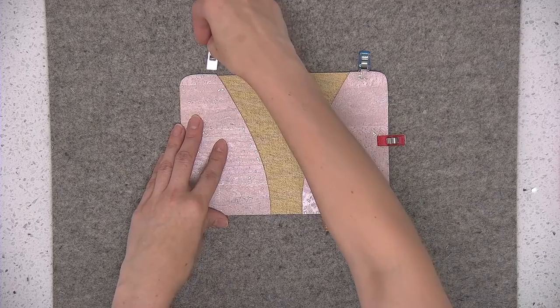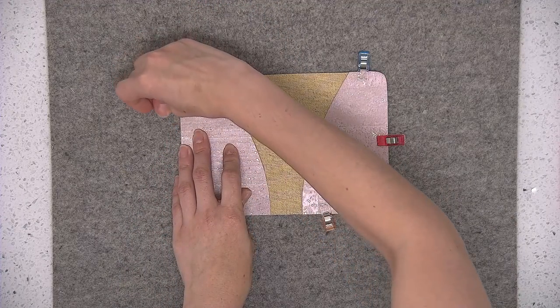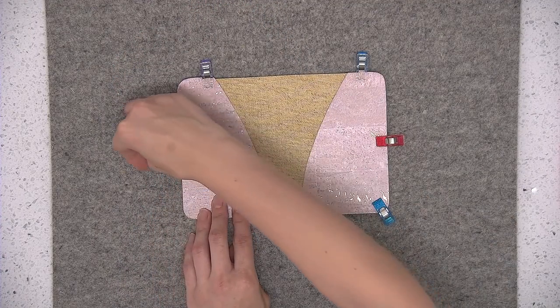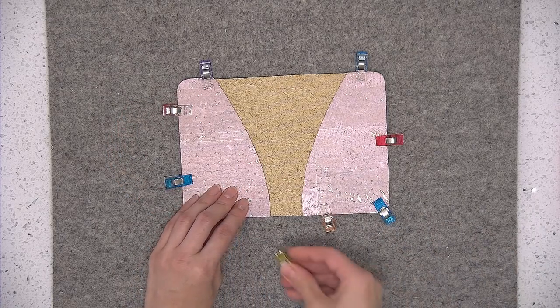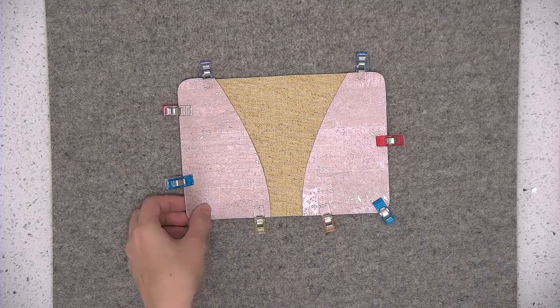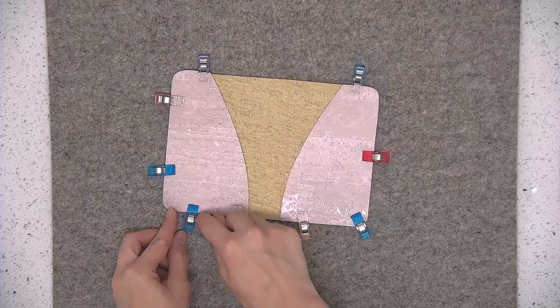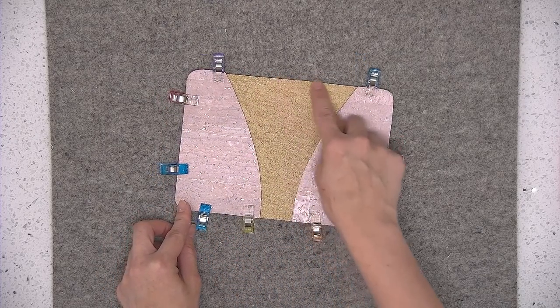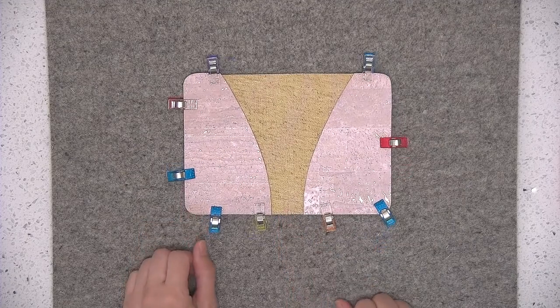I'm going to take this over to the sewing machine and sew the entire outer edge of the main panel using one eighth of an inch seam allowance and that will secure both of the pocket pieces. I'm going to stitch all the way around including this area where there's no pocket piece until I come up to the other side.